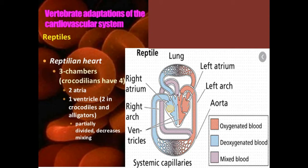Crocodiles and alligators have four chambers, while other reptiles are present with three chambers. In reptiles, there is a partial separation in the ventricle — on the left side oxygenated blood is present, and the oxygenated blood does not mix with deoxygenated blood because of this partial separation present. This is the advantage of the partial separation.